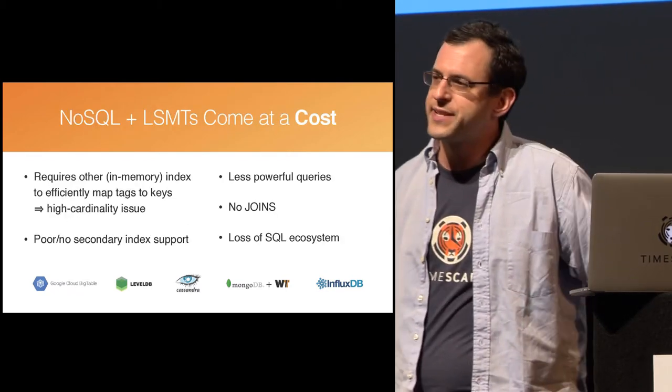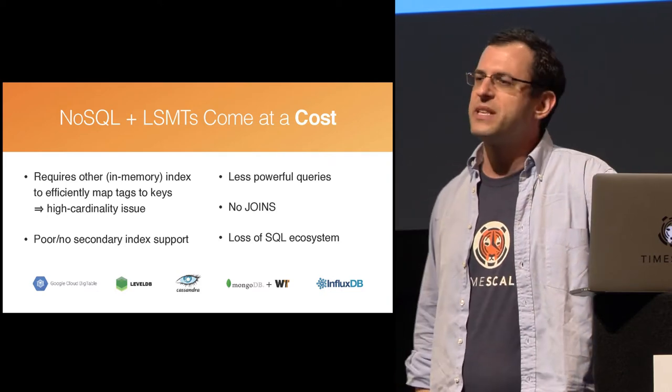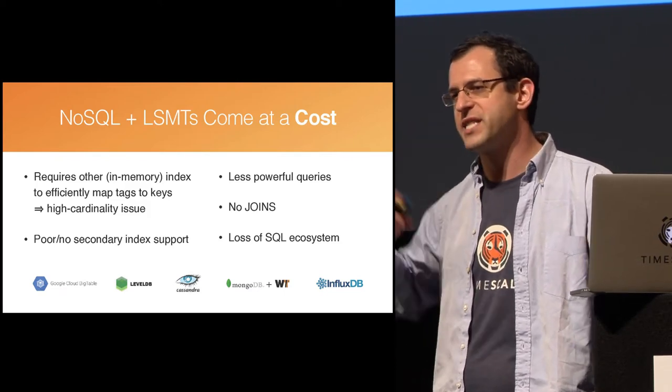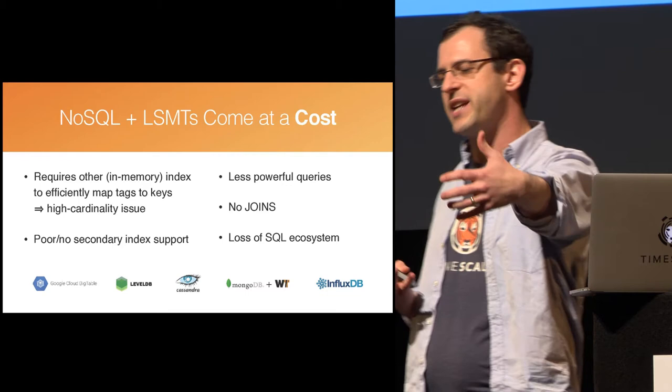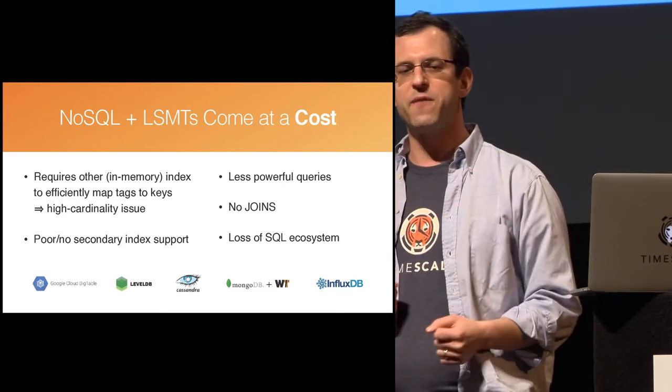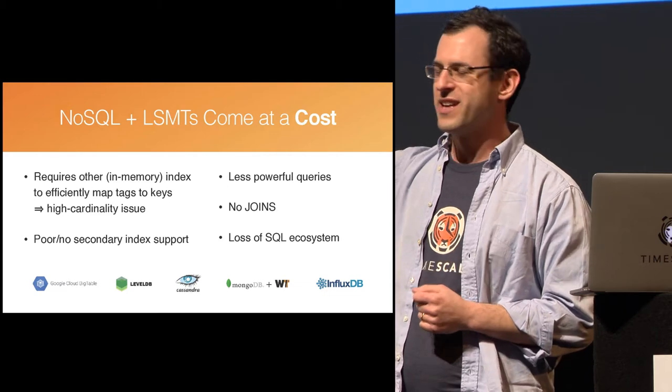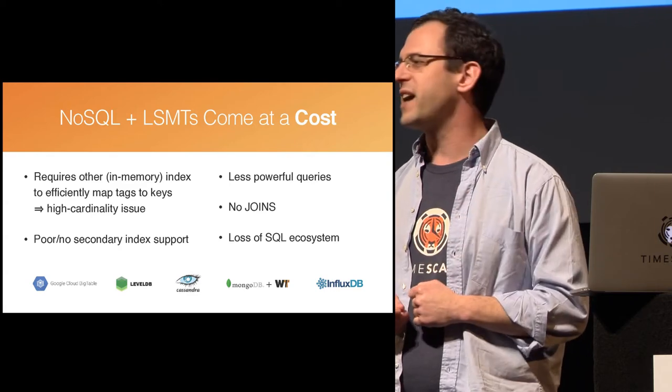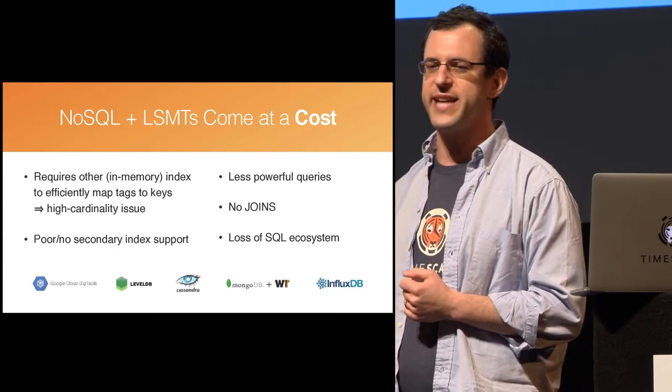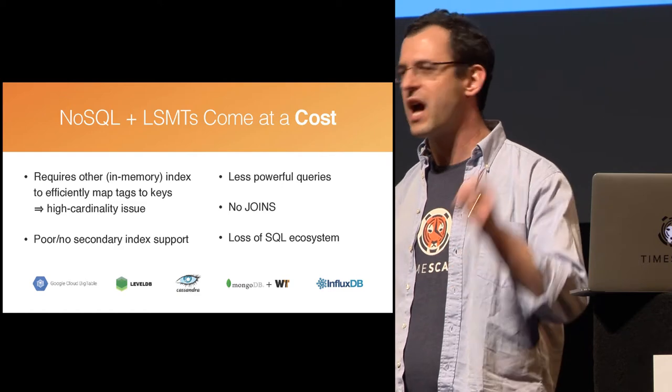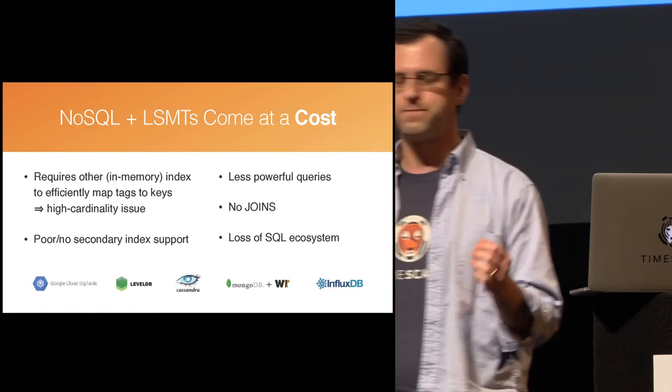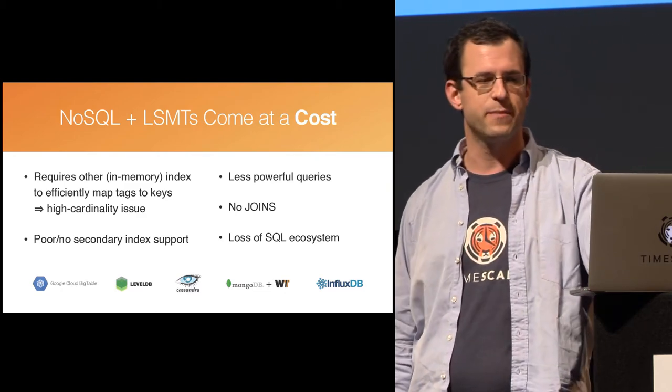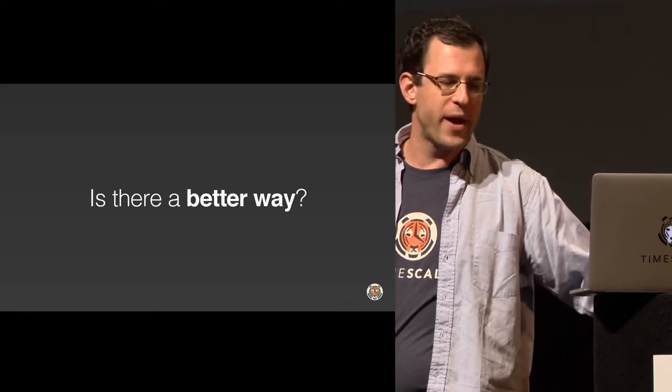This actually leads to higher insert rates, but the problem is it often leads to very high in-memory indexing. A lot of these things will start keeping separate data structures for each unique time series. And so if the number of time series grows combinatorially as the combination between all these different unique sets of tags, if you have a million device IDs, a thousand locations and ten data types, this is already ten billion separate time series, and these databases can't handle that.